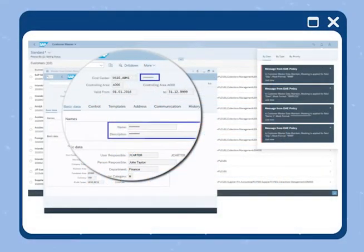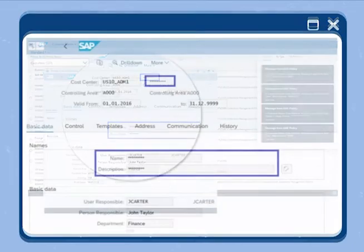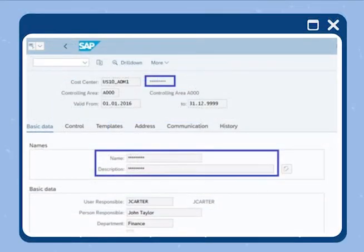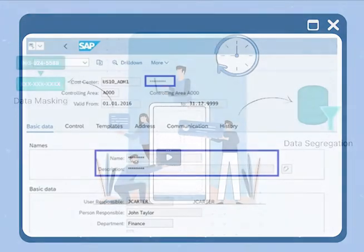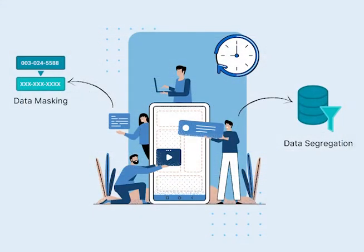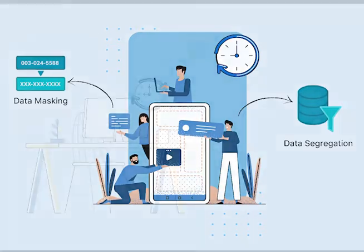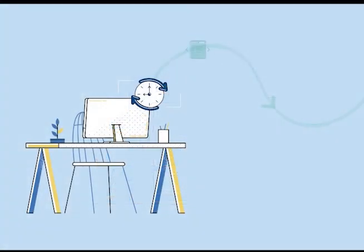Field-level data masking prevents users from accessing data in fields they are not authorized to view by masking those fields when the data is retrieved. Similar to record-level data filtering, DAE uses a policy-driven approach to mask data in unauthorized fields based on attributes. These centrally managed policies define masking patterns and rules to determine which fields to mask in real-time.